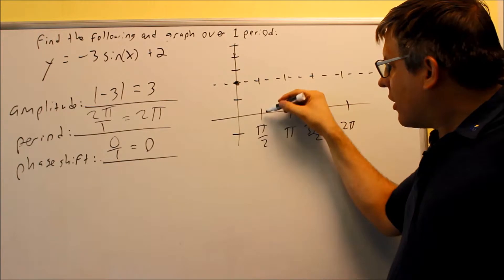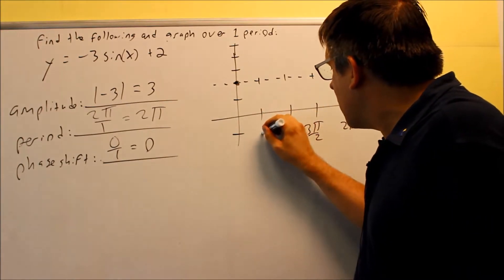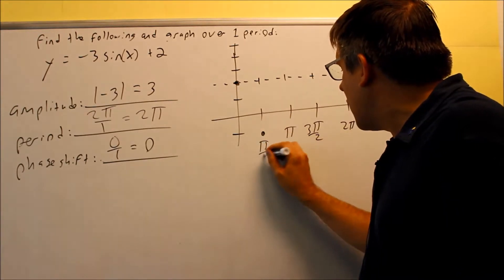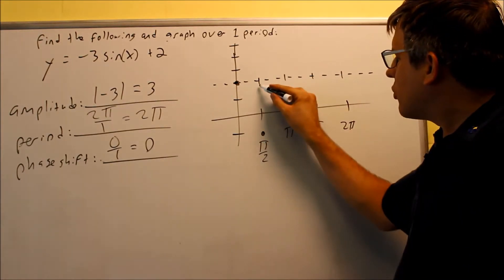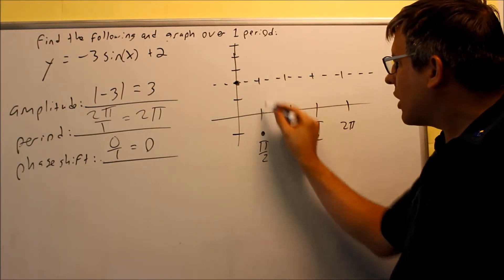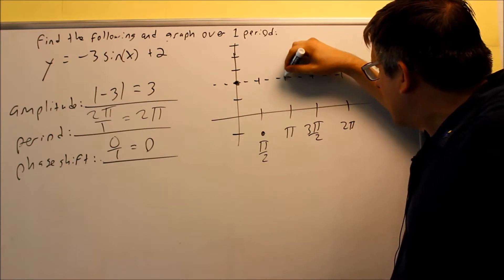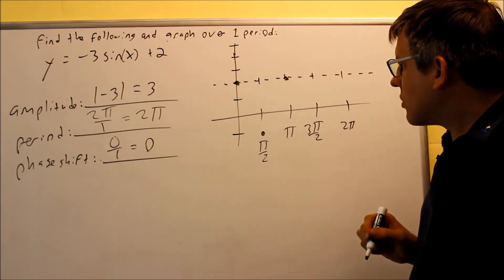It's not going to intersect here, but actually here. This point is at π/2, which corresponds to π/2 right here. It's going to go down to this point at π/2, then come back up to the axis.